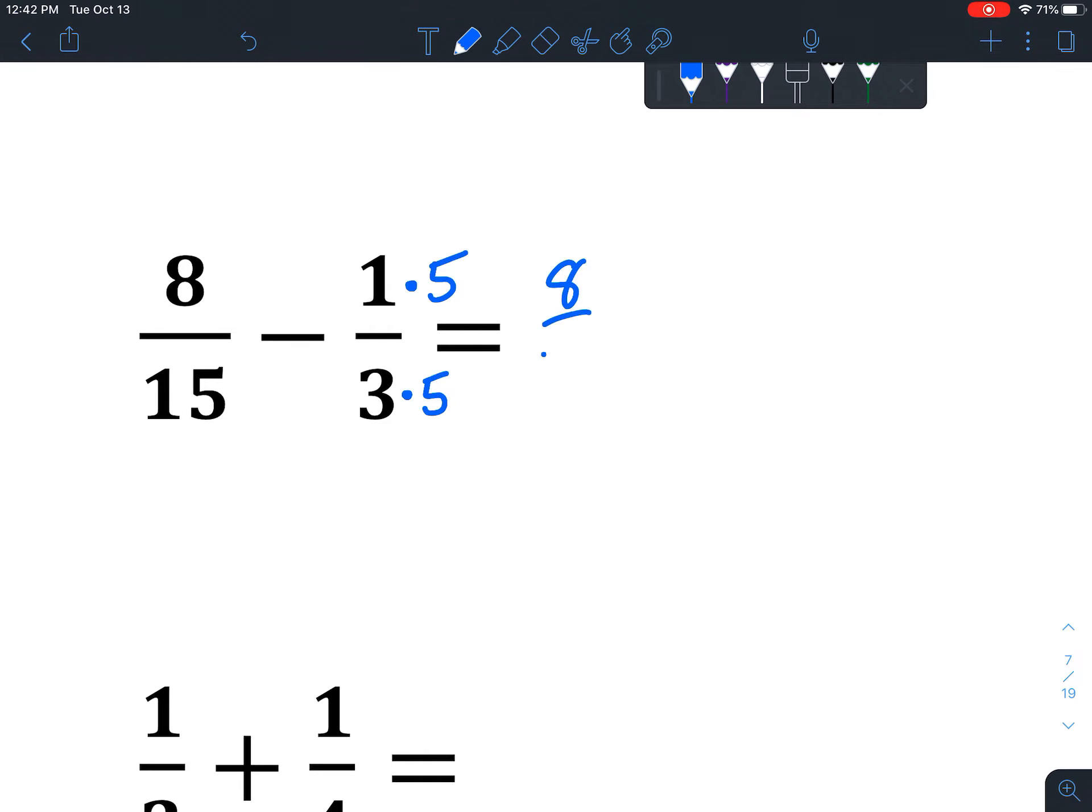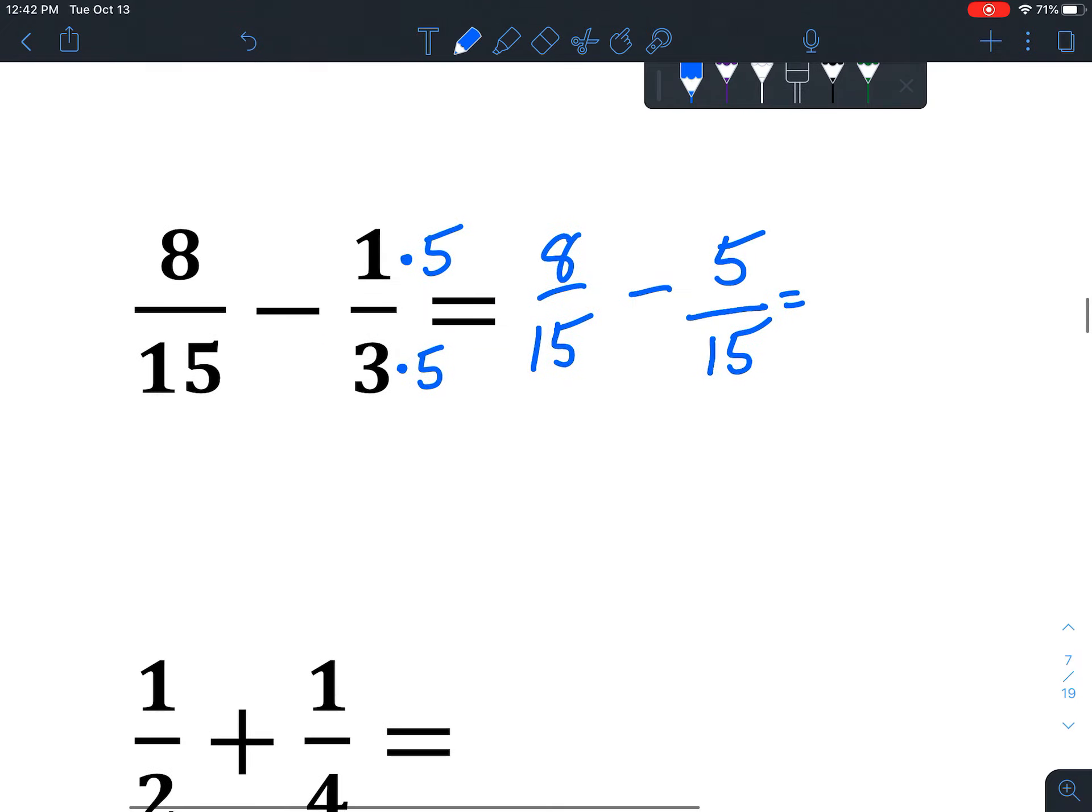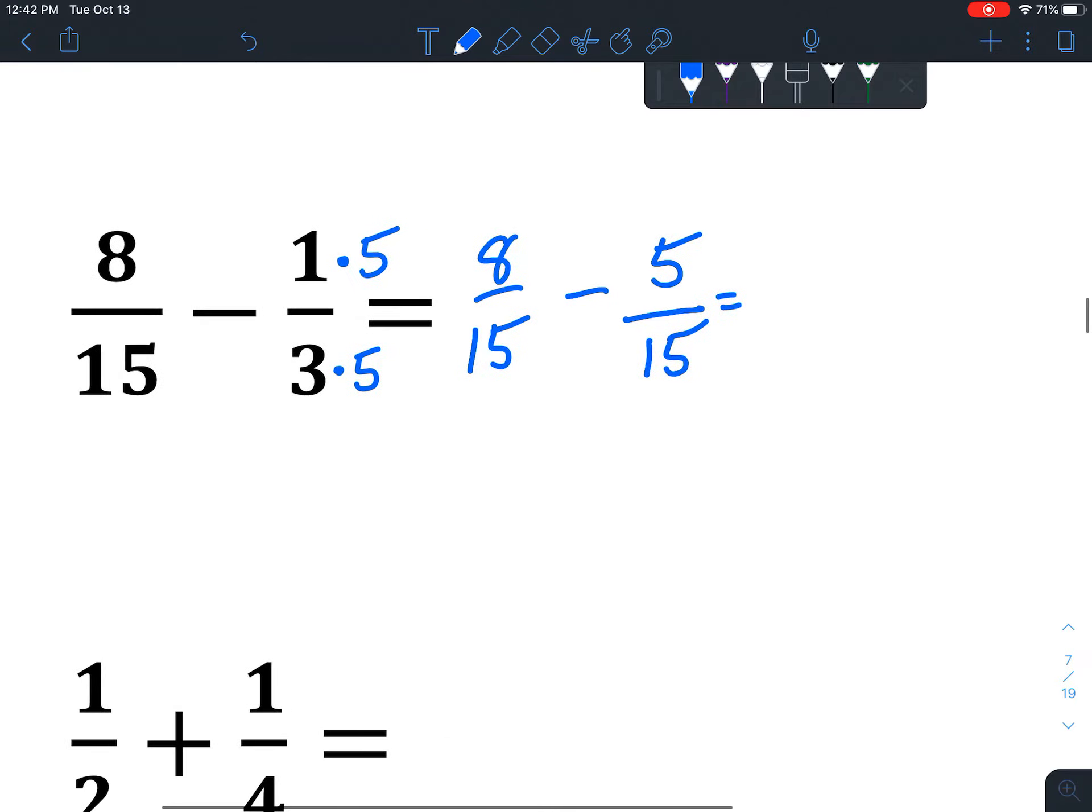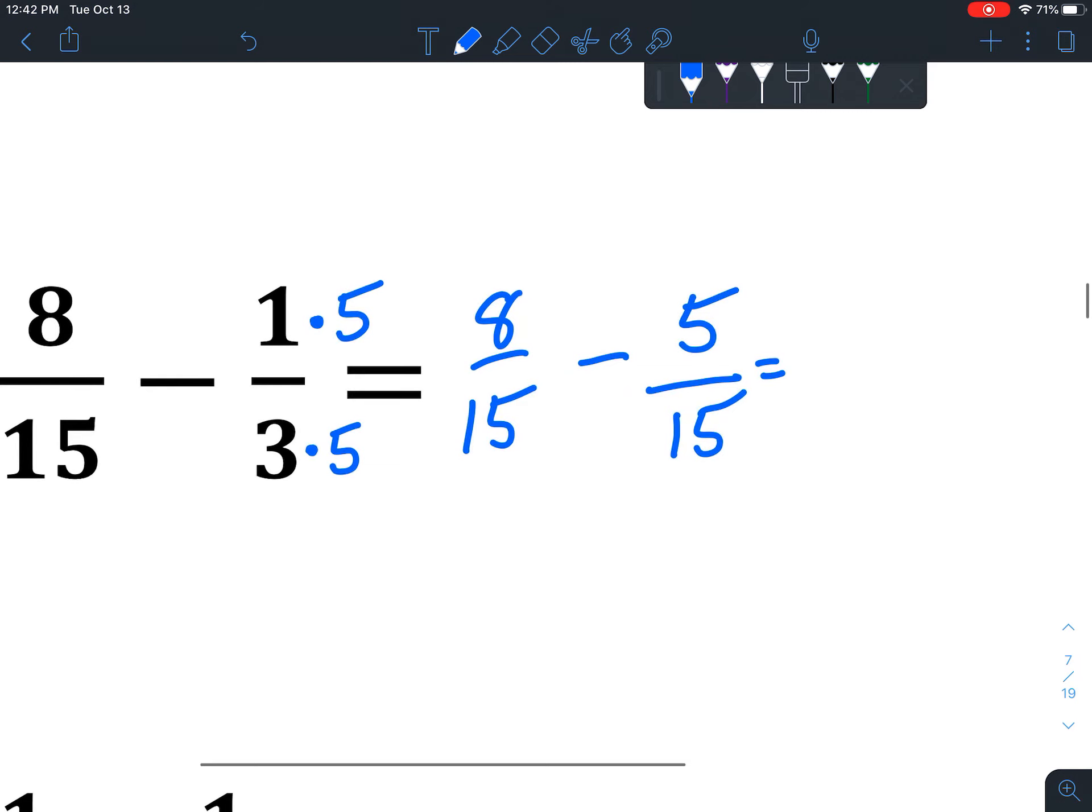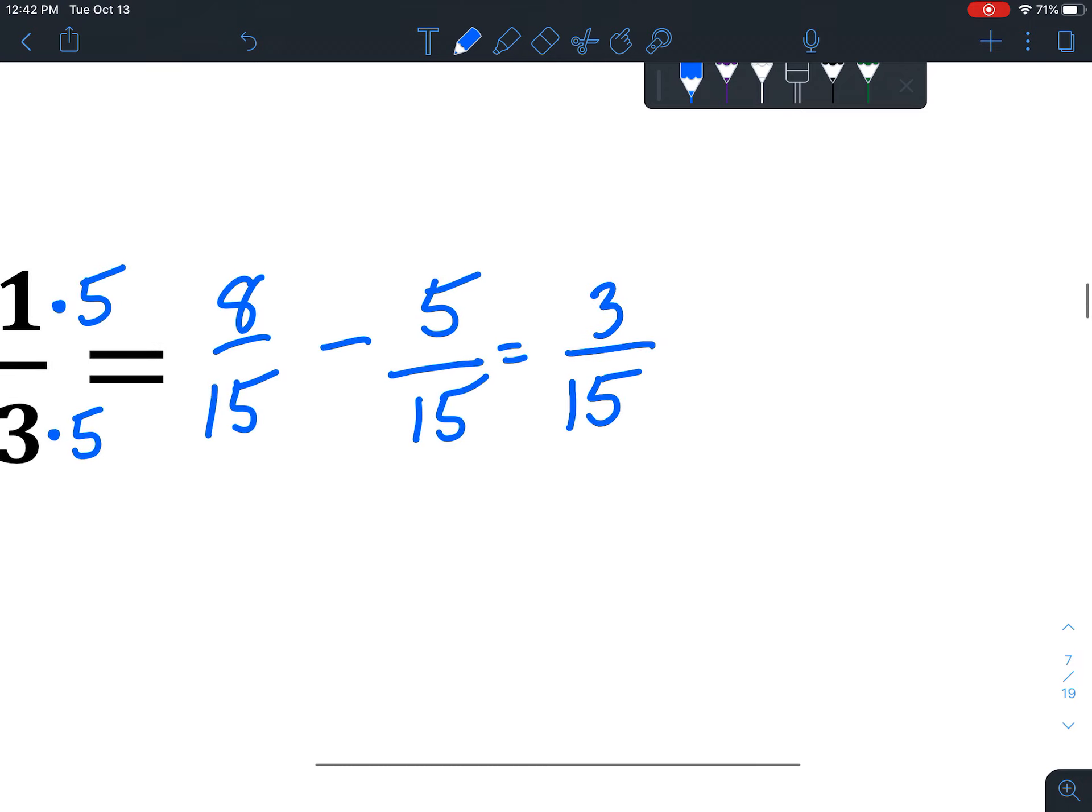Okay, so let's rewrite this. 8 over 15 minus – so 1 times 5 is 5, and then 3 times 5 is 15. And we got that from right there. Alright, now that we have the same size pieces, now we just subtract. So we've got 8 minus 5 is 3, and the piece doesn't change the size of it. Now one last step.